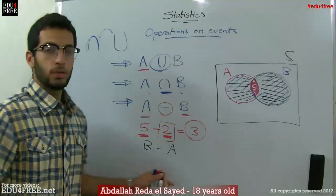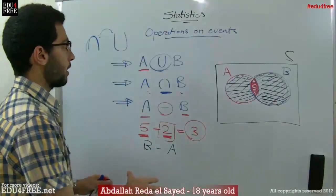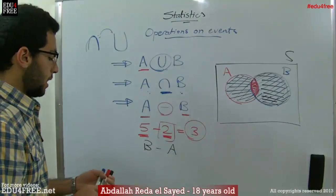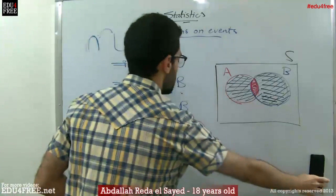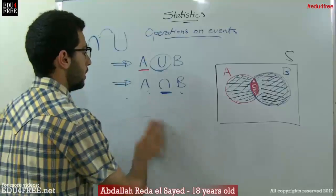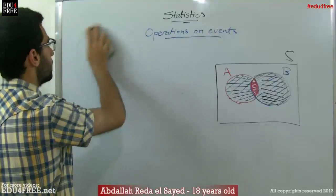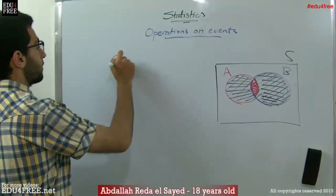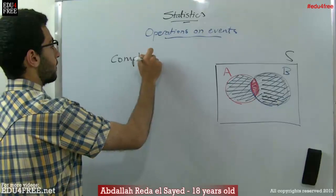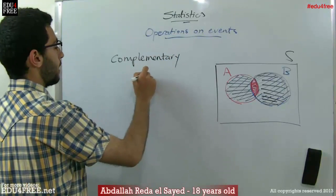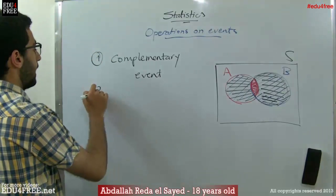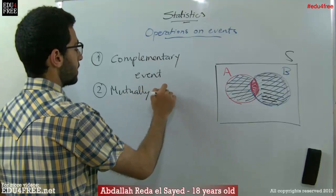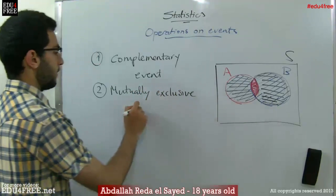These are the general terms that we are talking about in operations on events. Then we have to mention something else: a complementary event, and mutually exclusive events.